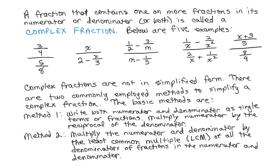The first method is to write both the numerator and denominator as single terms or fractions, and then multiply the numerator by the reciprocal of the denominator. The only example above where you already have a single fraction in both the numerator and denominator is the very first one: three-fourths in the numerator and five-eighths in the denominator. All of the rest are not in that form.